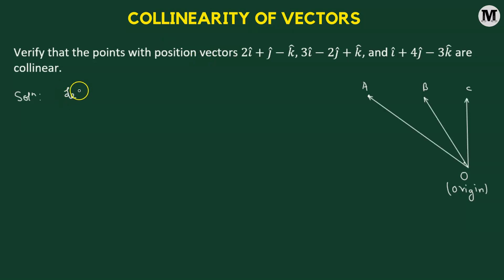So here, we will suppose that the position vector of point A, which is given by OA vector, let's say it is represented by the vector 2i cap plus j cap minus k cap.